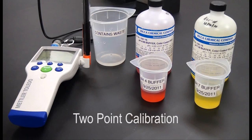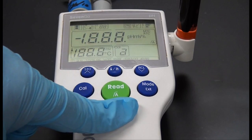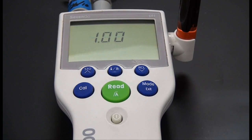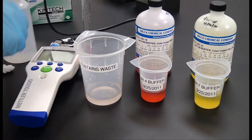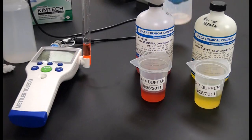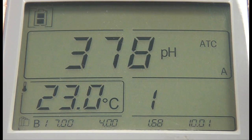To perform a 2-point pH meter calibration, power on the meter. Rinse the electrode with deionized water and blot dry with a chemiwipe. Place the electrode in a calibration buffer solution and press the CAL button.